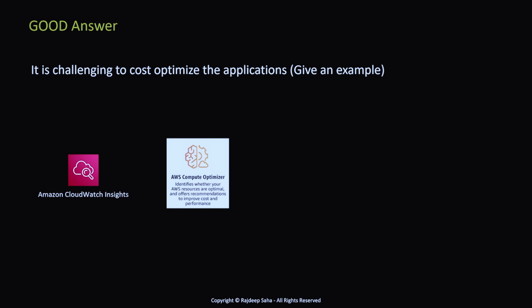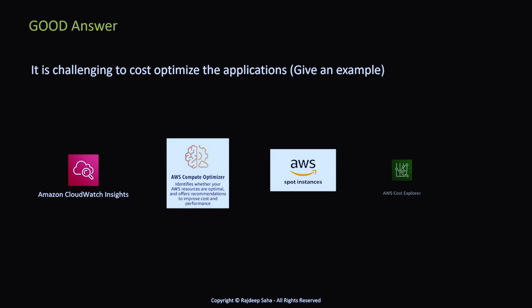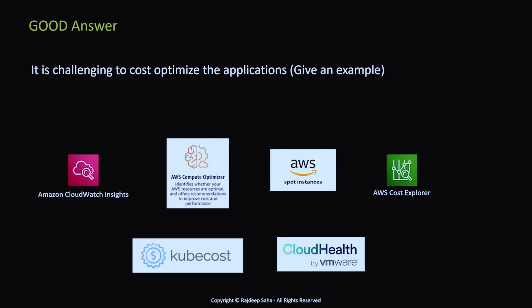Another area where theory differs from real world is cost optimization. It's challenging to cost-optimize applications, and on playground projects you don't focus on cost much. For cost, you should use CloudWatch Insights, AWS Compute Optimizer — which identifies the right EC2 types or Lambda memory allocation — AWS Spot Instances in test environments, and AWS Cost Explorer for analyzing charges. For Kubernetes specifically, you can use KubeCost or Cloud Health by VMware for cost optimization recommendations.